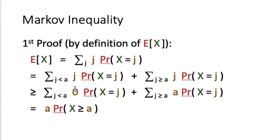The first summation, with j replaced by zero, becomes zero. In the second summation, we factor out a, giving a multiplied by the sum of probabilities P(X = j) for j greater than or equal to a. This sum is exactly the probability that X is greater than or equal to a. So we get: expected of X is greater than or equal to a times P(X ≥ a), which gives the desired result.